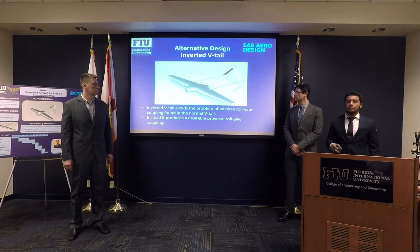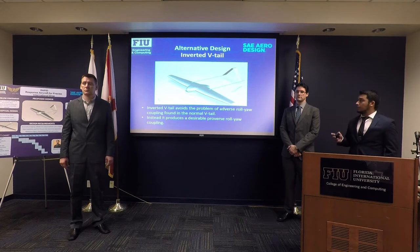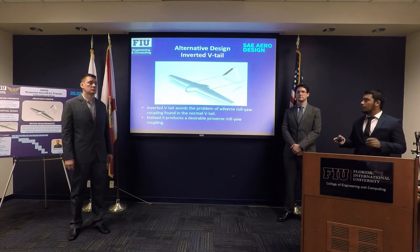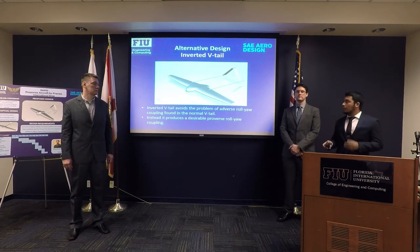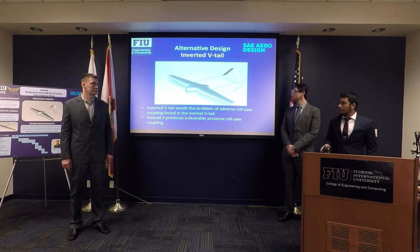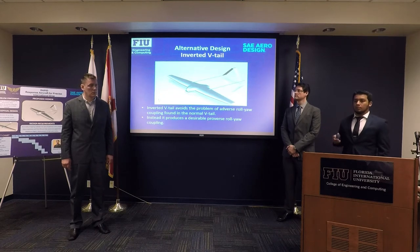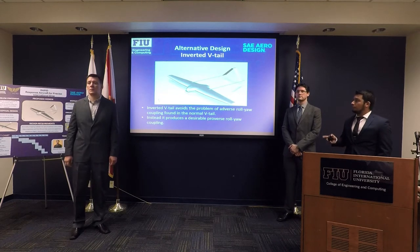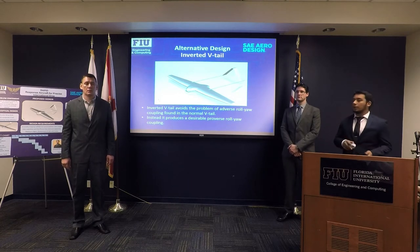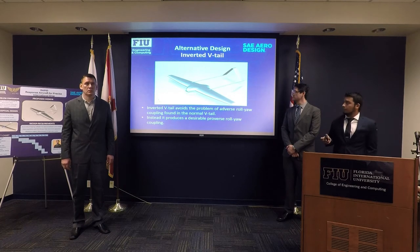The final design features the same blended wing coupled with a twin-boom inverted V-tail configuration. The twin boom offers increased structural stability, especially in the torsion direction. Also, the inverted V fixes the problem of adverse roll-yaw coupling found in a normal V, and instead produces a desirable proverse roll-yaw coupling. This configuration is also intended to use pusher propulsion, where the propulsion system sits on the tail, leading to desirable airflow over the lifting surface of the main wing, producing a little more lift than the previous design.